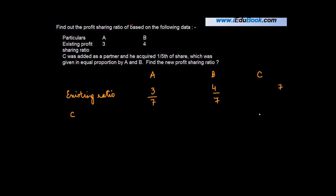He got 1/5 of the share which he got in equal proportion from A and B. So out of 1/5, some share was given by A and some was given by B.